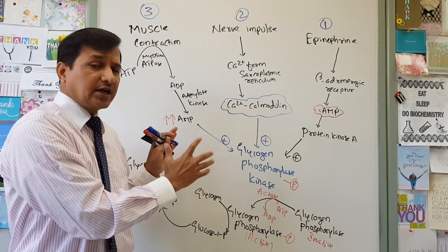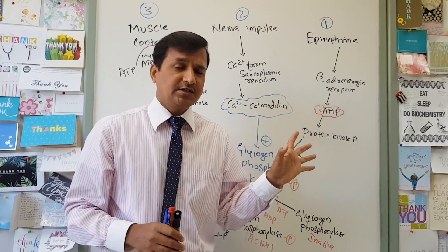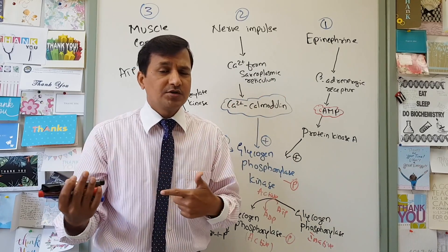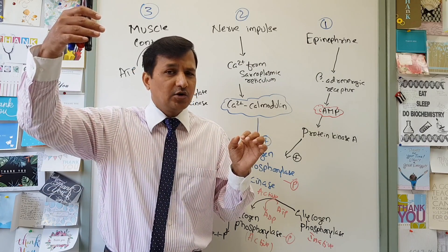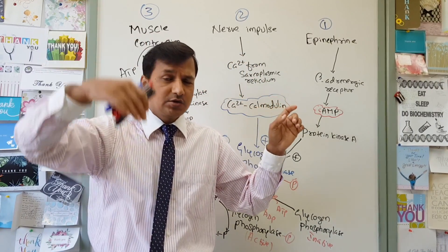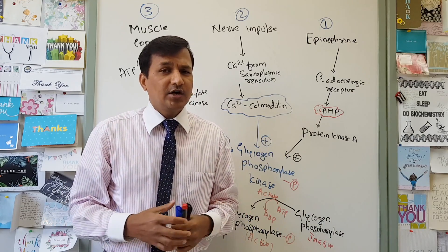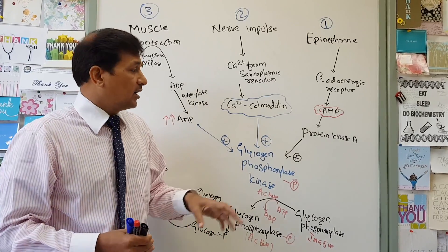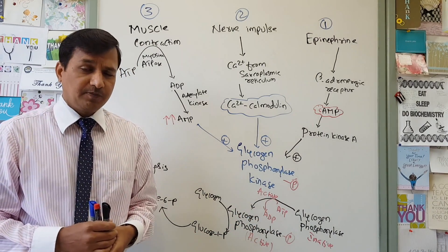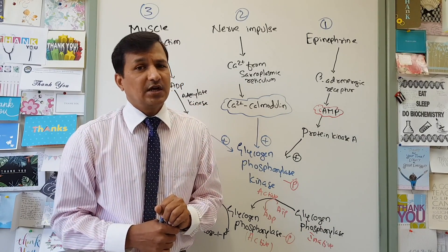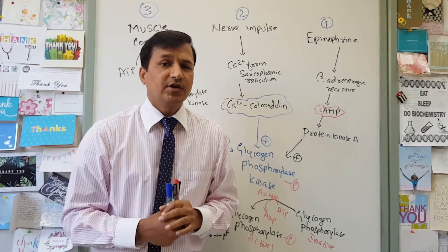Importantly, glucagon does not act on skeletal muscle because skeletal muscle lacks glucagon receptors. In the fed condition, insulin binds to insulin receptors on skeletal muscle, bringing GLUT transporters to the membrane so glucose can enter. Insulin also keeps glycogen synthase in its active dephosphorylated form, promoting glycogen synthesis, while removing phosphate from glycogen phosphorylase kinase and glycogen phosphorylase to keep both inactive, decreasing glycogen degradation.